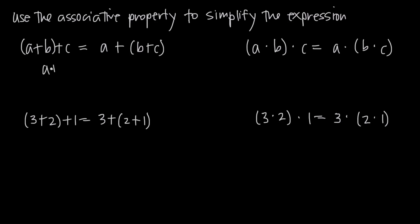In other words, no matter how we've grouped it, we're still going to end up with a plus b plus c on the left and a plus b plus c on the right. They're going to be equal to each other.